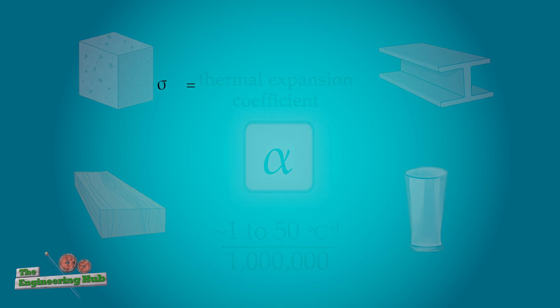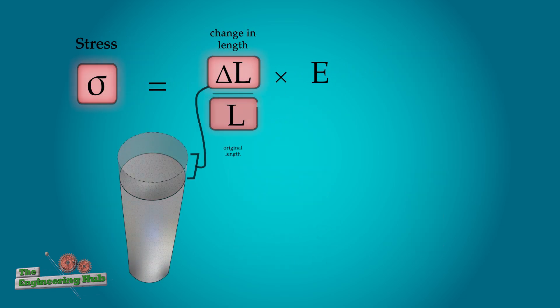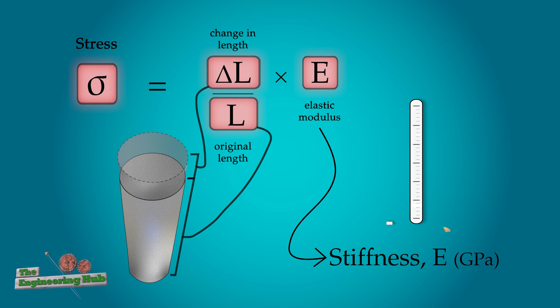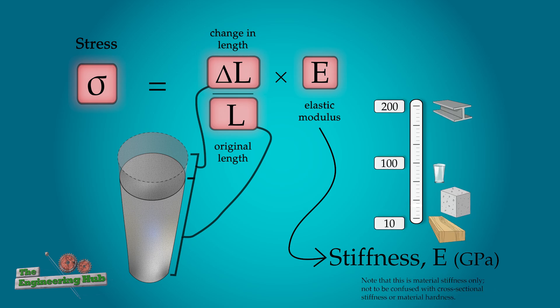The second equation can tell us how much stress is caused in the beam if this change in length is constrained, which will depend on how stiff the material is. More on that later.